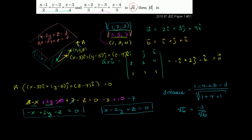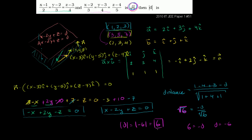They tell us the distance between the two planes is square root of 6. So negative d over square root of 6 equals square root of 6. Multiplying both sides by square root of 6 gives negative d equals 6, so d equals negative 6. Since the question asks for the absolute value of d, the answer is the absolute value of negative 6, which equals 6.